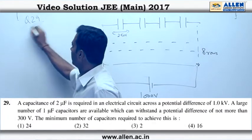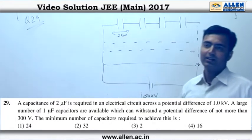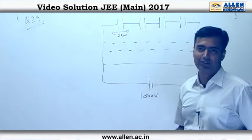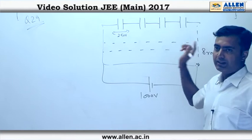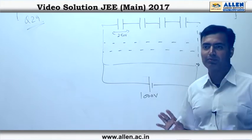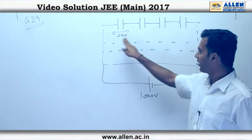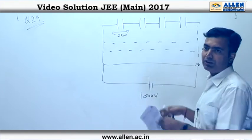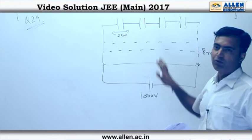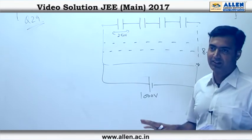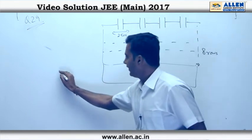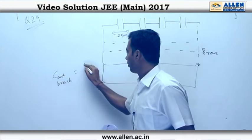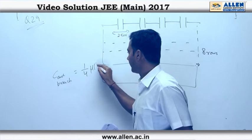Question 29. This is a fundamental problem of arranging capacitors to get a particular condition for C equivalent. Each capacitor can bear a maximum of 300 volts. If you put 4 capacitors in series in order to place them with the 1000-volt battery, each would bear 250 volts, which is a safe voltage. This gives a C equivalent of each branch as 1/4 microfarads.